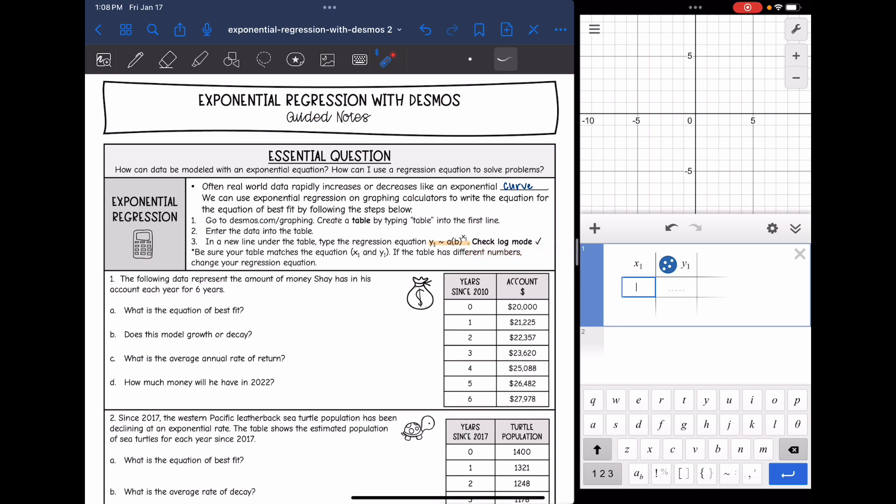In a note, make sure that your table matches the equation. Like see my table here has X1 and Y1. So that's what we would put in our equation. If the table has different numbers you need to change that regression equation.